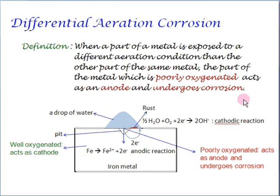Let me put it this way: when a metal is exposed to two different aeration conditions, the part which is poorly oxygenated acts as an anode and undergoes corrosion.